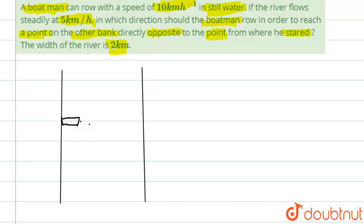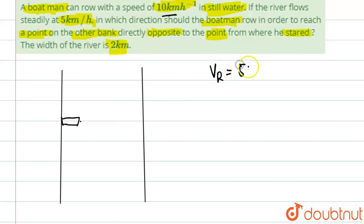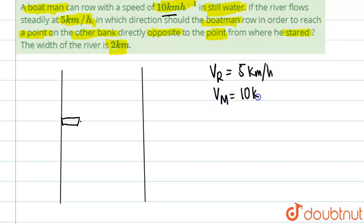The boat has a steady speed of 10 kilometers per hour in still water. The river is flowing at a speed of 5 kilometers per hour. So the velocity of the river (vr) is 5 km/h and the velocity of the boatman (vm) is 10 km/h.